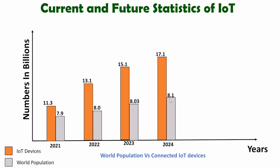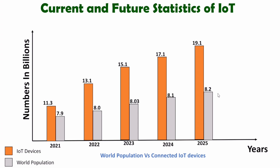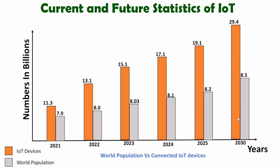So by 2024, more than two IoT devices will exist per single human being. In 2025, IoT devices are expected to reach around 19.1 billion, whereas the world's population will reach 8.2 billion. In 2030, the number of IoT devices will reach 29.4 billion, whereas the world's population is expected to be around 8.5 billion — meaning more than three IoT devices per single human being.